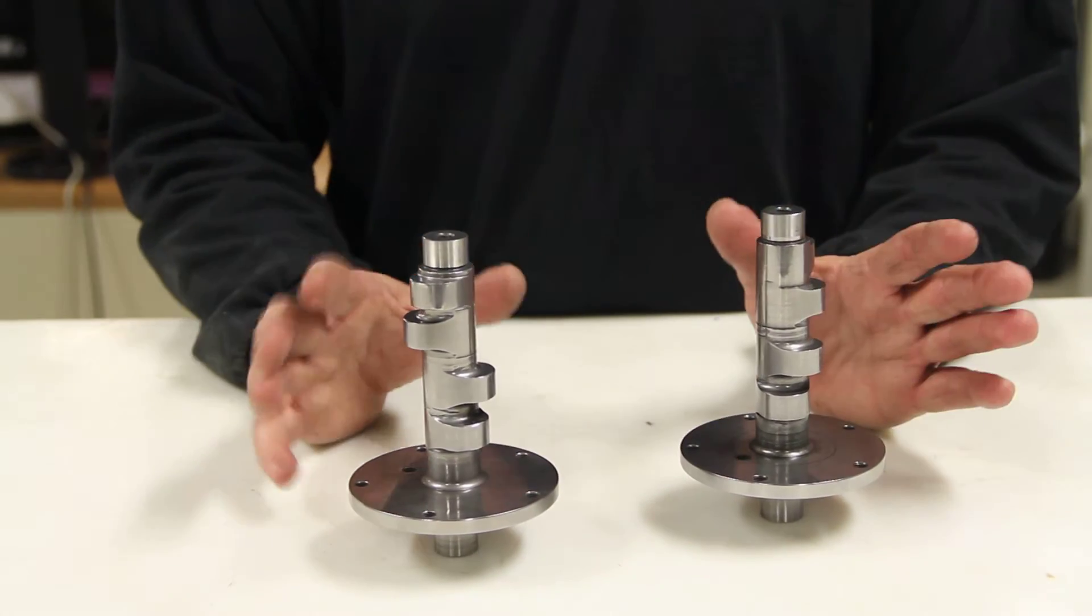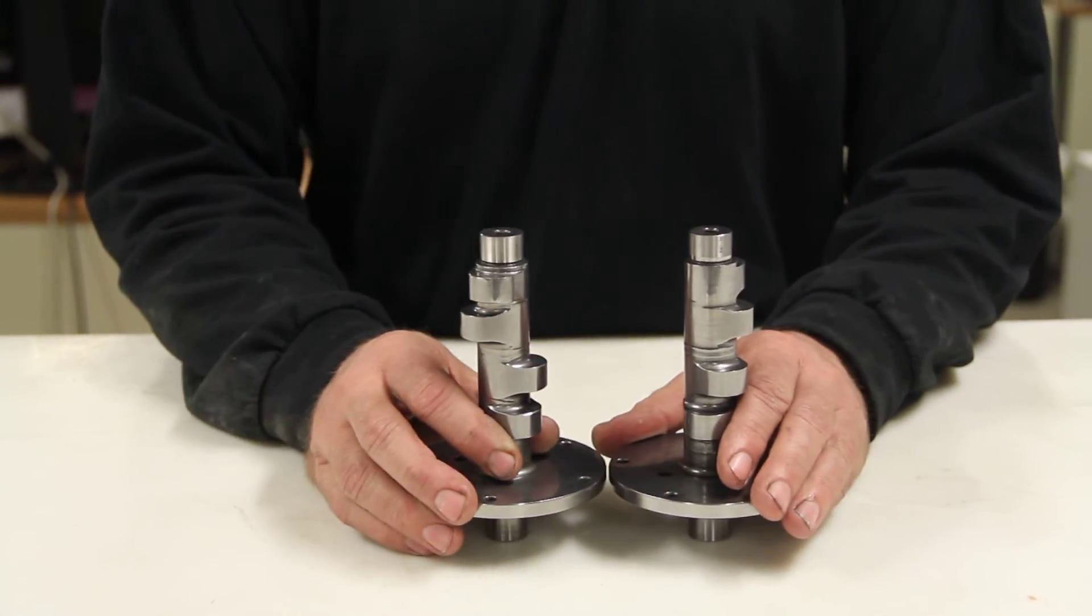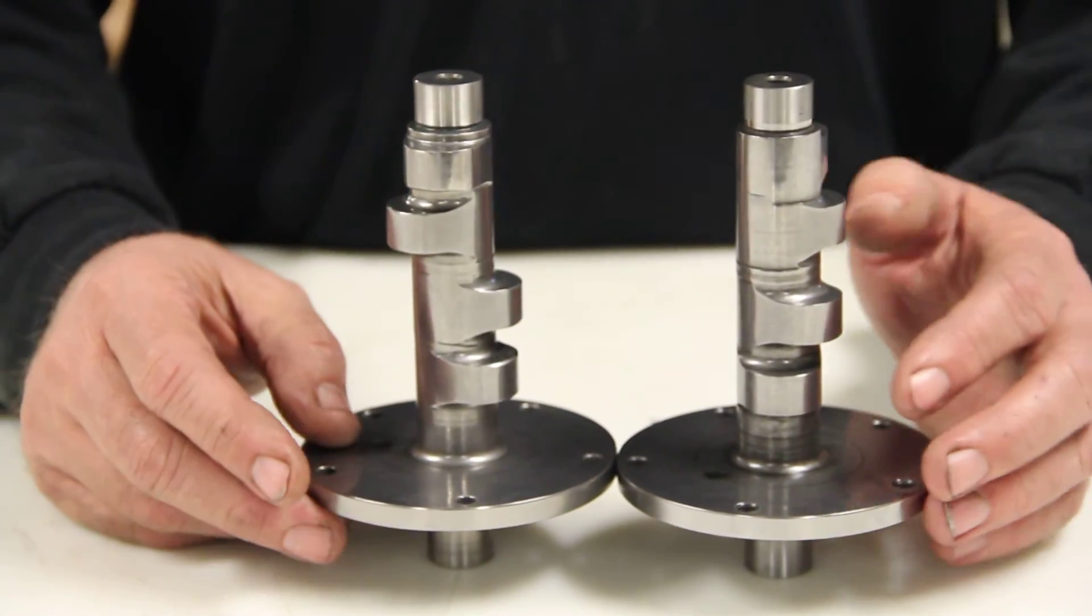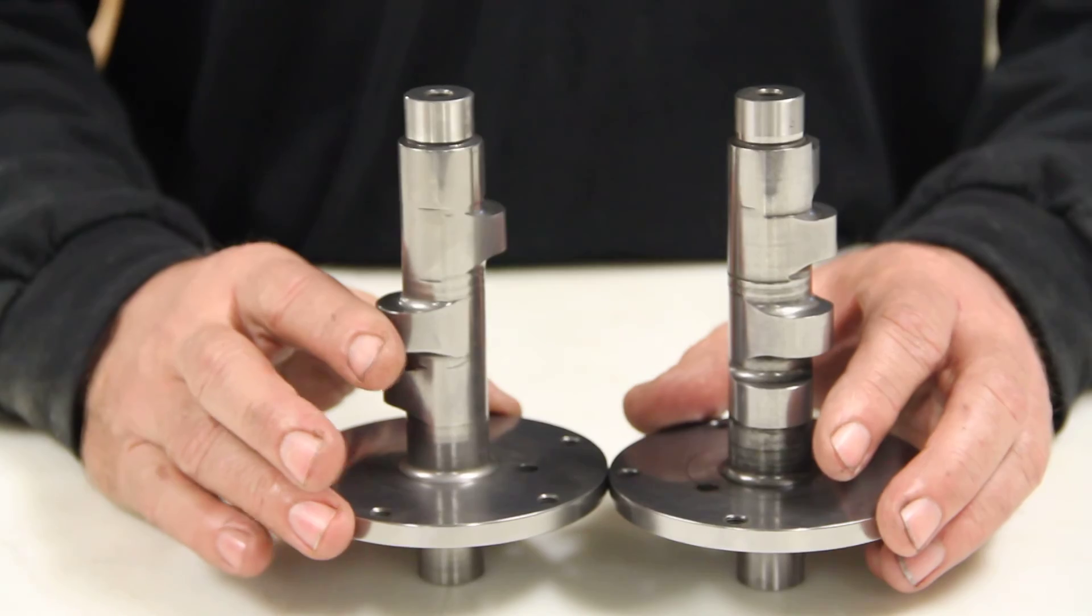So that's how you can easily tell if you've got a reverse grind cam or a standard grind cam. If you're going to buy something used from somebody and they're telling you one thing, you can easily check it to see what you've got before you buy it and get stuck with something you don't want.